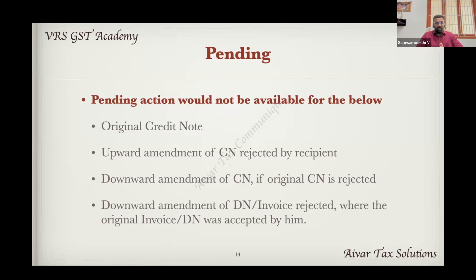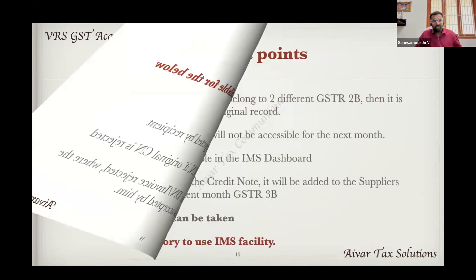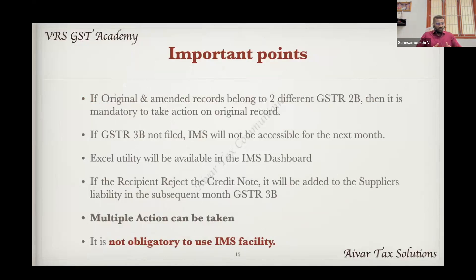Same issue — so this means that the credit note is the debit note. So original credit note, upward amount of credit note, downward amount of credit note. So this means that the credit note is the dollar. This is the important point. An original record and an amended record are available in a certain time. If you have an original record, you can have an amended record. For example, if you accept an amended record, you can accept an amended record.